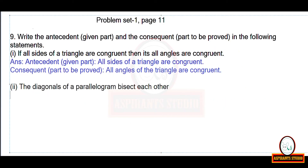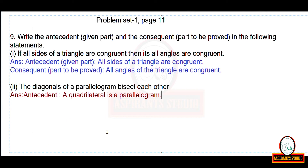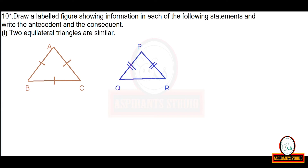Problem set 1, page 11: write the antecedent (the given part) and the consequent (the part to be proved) for each statement. For 'if all sides of a triangle are congruent then all its angles are congruent': antecedent is 'all sides of the triangle are congruent,' consequent is 'all angles of the triangle are congruent.' For 'the diagonals of a parallelogram bisect each other': antecedent is 'the quadrilateral is a parallelogram,' consequent is 'the diagonals bisect each other.'